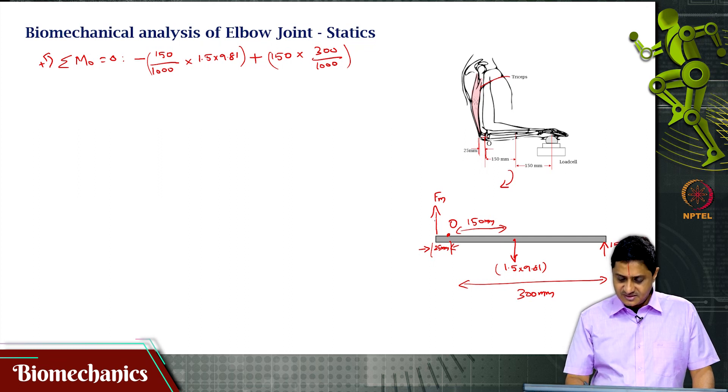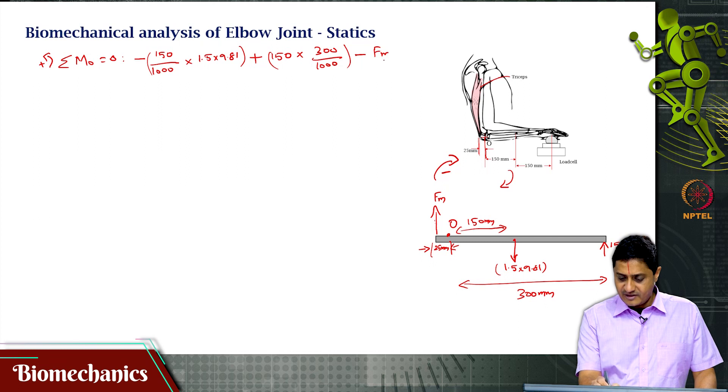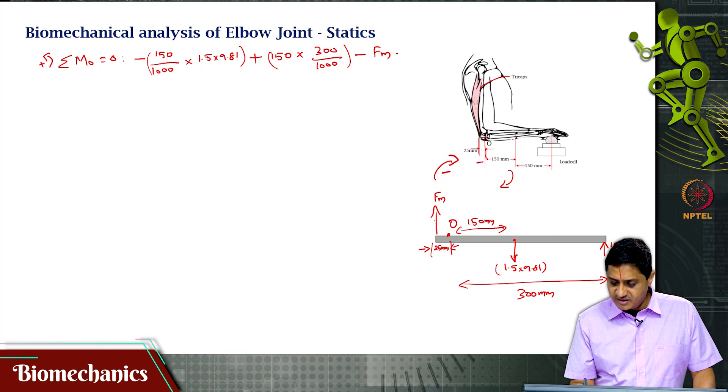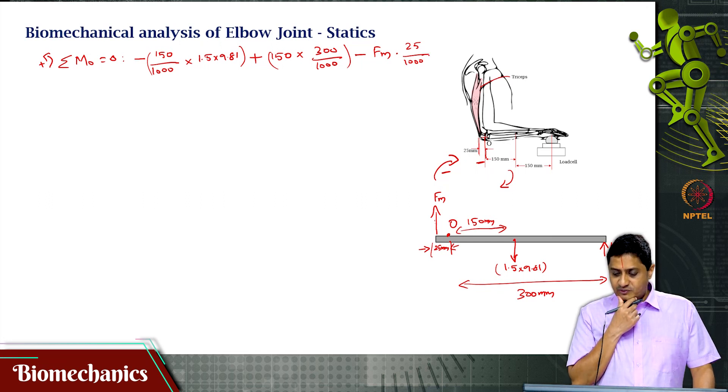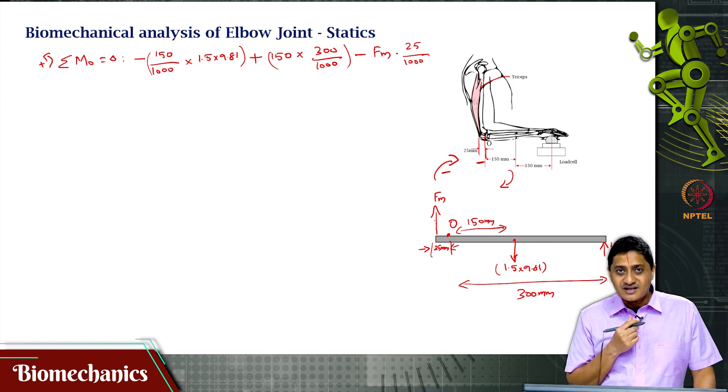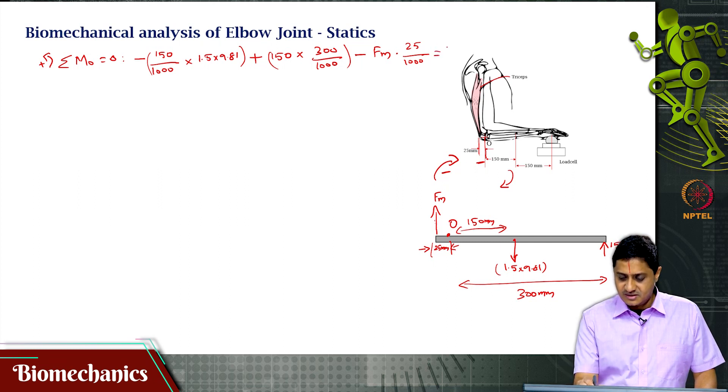Then what else? Of course, there is this muscle force and that will cause a clockwise moment, minus F_m into the moment arm is only 25 mm, 25 divided by 1000. Before I write equal to 0, let me check if there is any other force that I have missed. Have I missed anything? No. And then I am writing equal to 0.